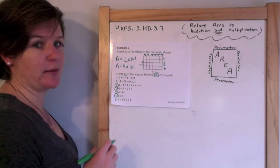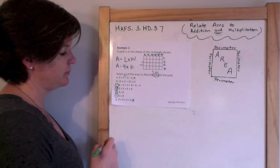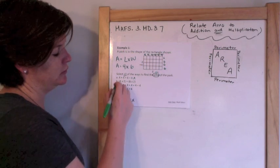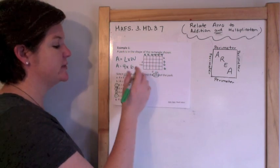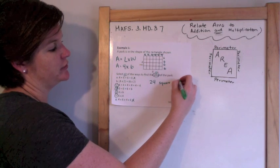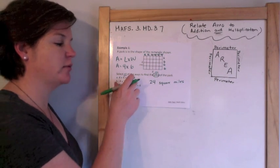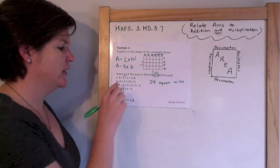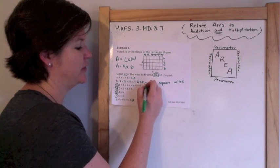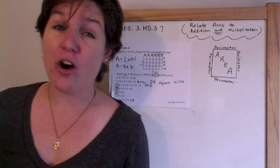4 times 6 times 4 times 6 would be the length times the width times the length times the width, which is not correct — it's only length times width one time. Let me check this other option: my area would be 24 square miles. I'm checking if I can use the distributive property. 4 times 2 is 8, plus 6 times 2 is 12 — that gives me 20, and I need 24. So that is not correct.